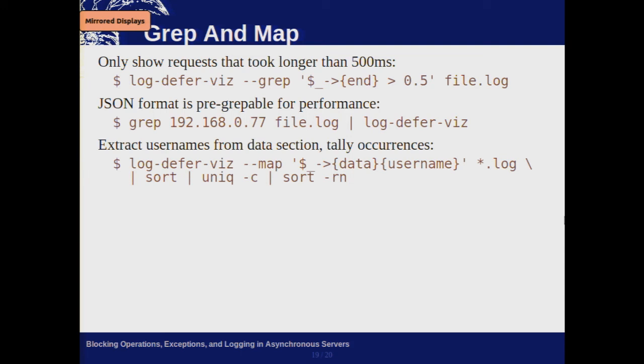Decoding JSON is often really slow, so one design feature of the log-defer structured format is that you can pre-grep it — anywhere a string appears you can output it, though you have to be aware of false positives. There are also other ways to store structured logs; it doesn't have to be JSON — there are more efficient serialization formats. As a final example, you can use typical Unix pipeline components: map each message and extract a username that was recorded, then do standard Unix tallying to get a nice report.